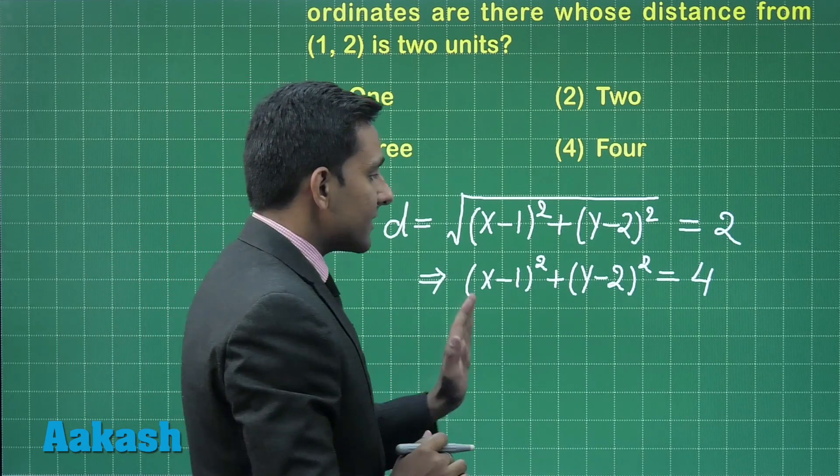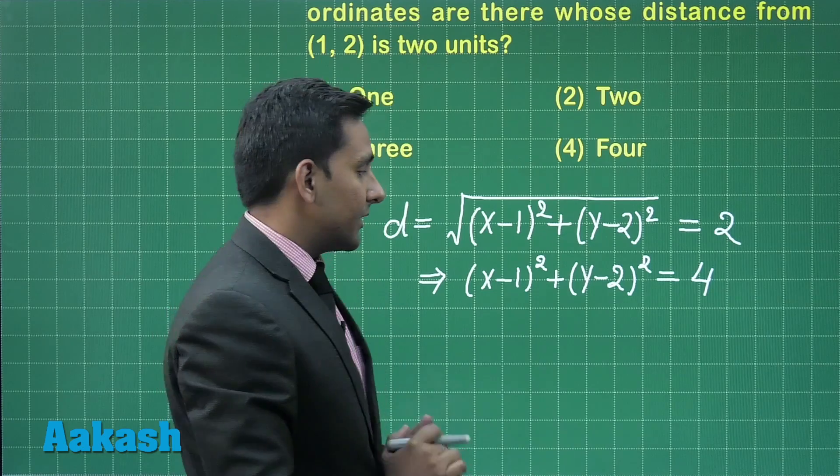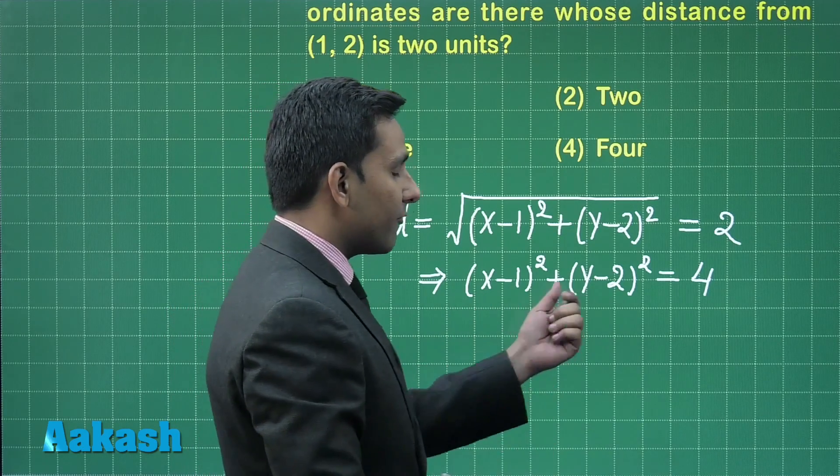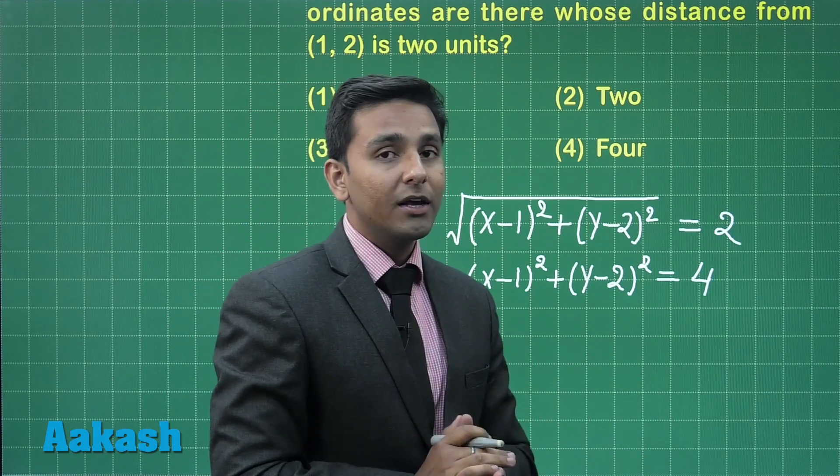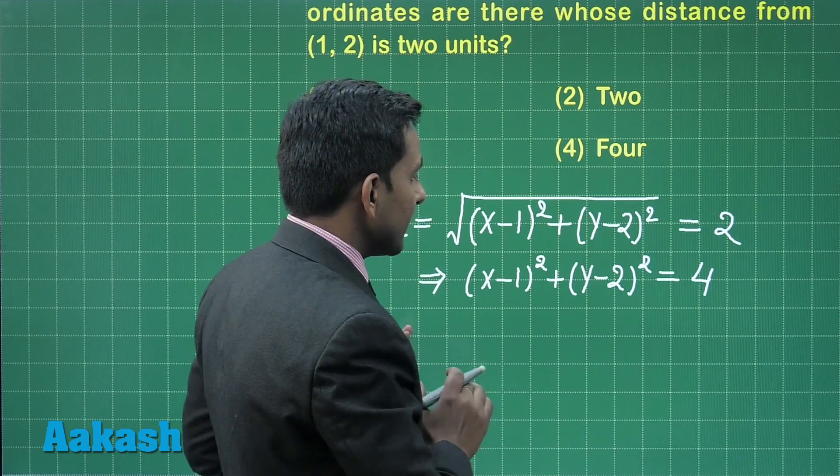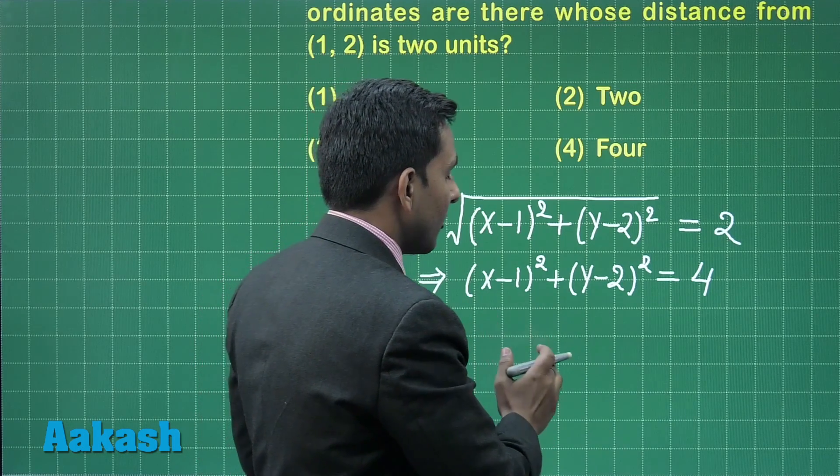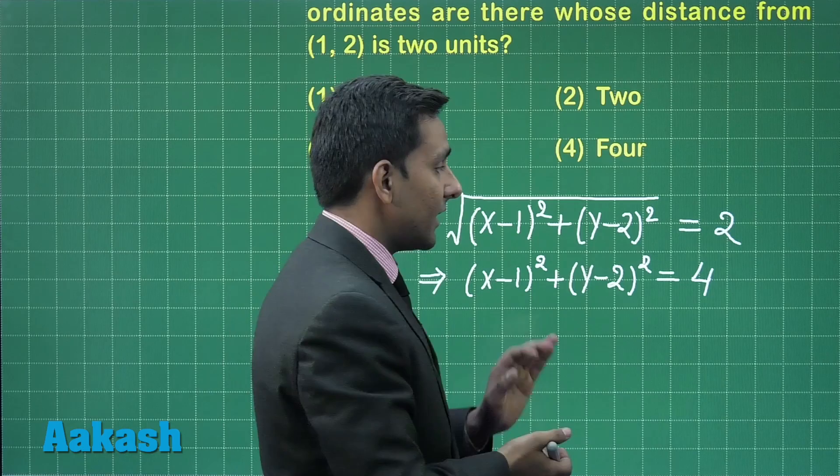Here we can see that x and y are integers, which means x minus 1 and y minus 2 will also be integers. We are getting the sum of squares of two integers as 4.